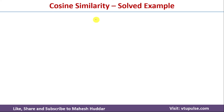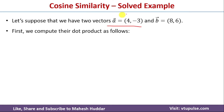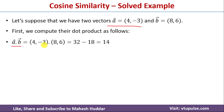Now we will understand how cosine similarity is calculated with a simple solved example. Let us assume there are two vectors A and B, where A equals (4, -3) and B equals (8, 6). To find the cosine similarity, first we calculate the dot product A·B, which equals 4×8 plus (-3)×6, giving us 32 minus 18, which equals 14.